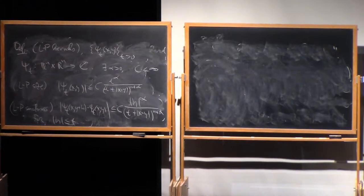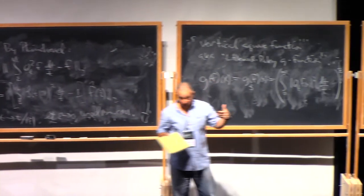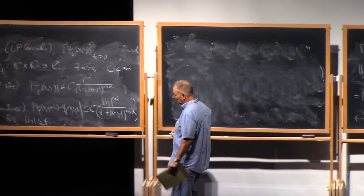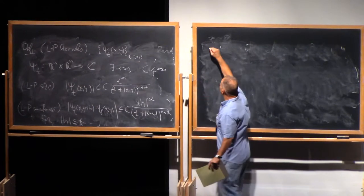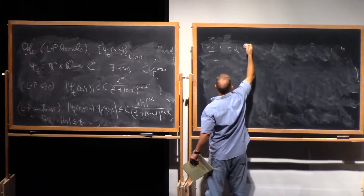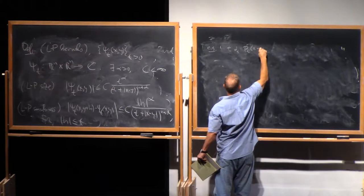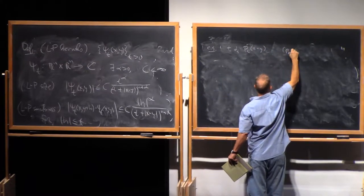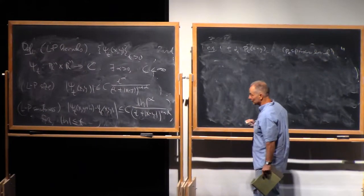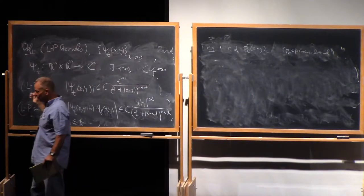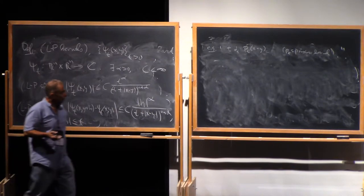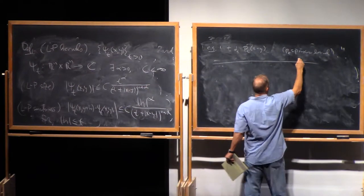So of course, these nice zeta_t's that were C_0 infinity and compactly supported satisfy this property, but other things do as well. For example, if you take t times a derivative of the classical Poisson kernel, it's gonna satisfy those conditions. Actually, the Poisson kernel itself does, but in a moment, we're gonna want some kind of cancellation condition which does not apply to the Poisson kernel, but does apply to its derivatives.